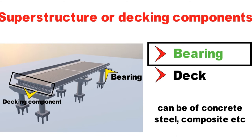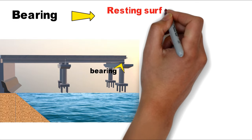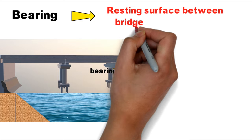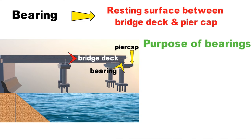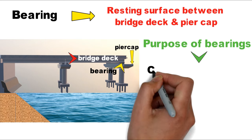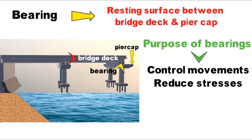First we will discuss the bearing. The bearing is the resting surface between the bridge deck and the pier cap. The area below the bearing is the substructure and above the bearing is the superstructure. The purpose of the bearing is to control moments, reduce stresses, and it can move in both vertical and horizontal directions.